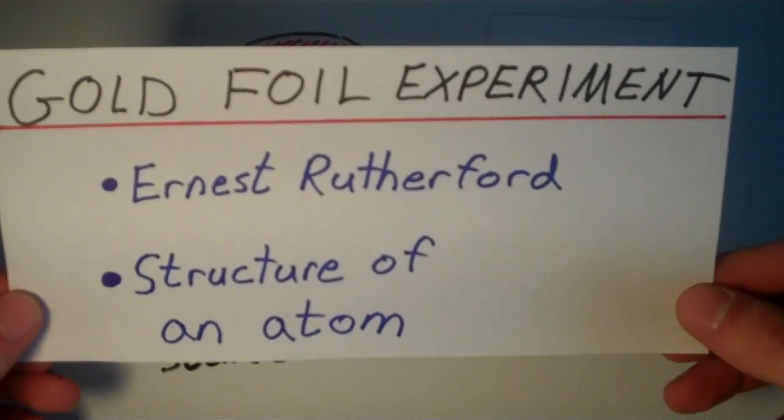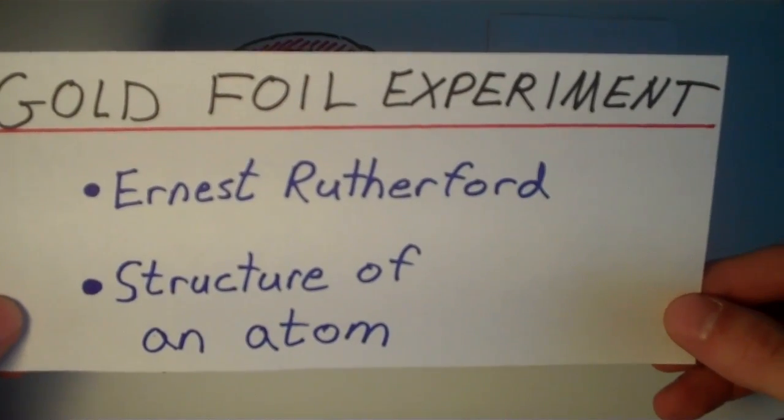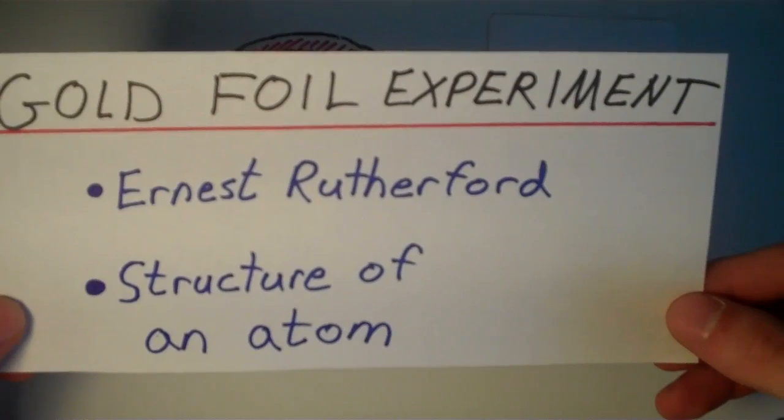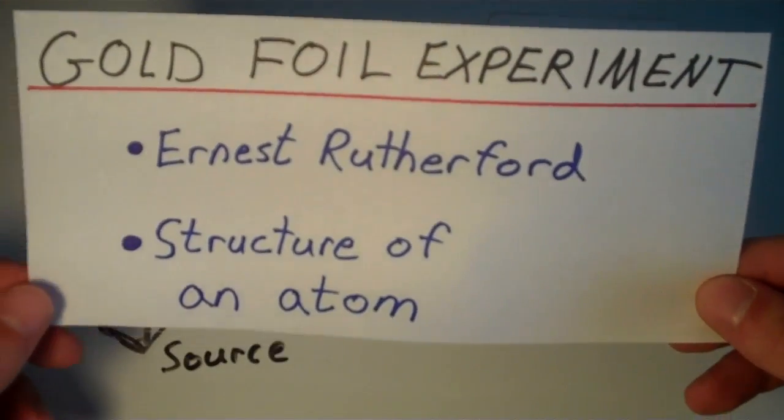So the question on everybody's mind then was, since atoms are neutral, there must be a positive charge that neutralizes this negative charge. So how do the positive and negative charges fit together within an atom?